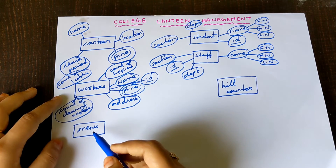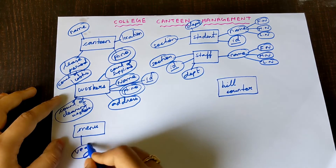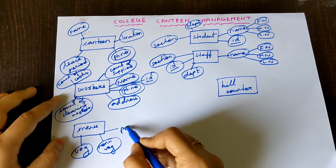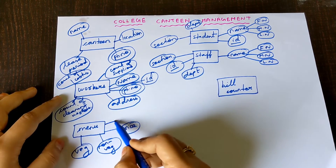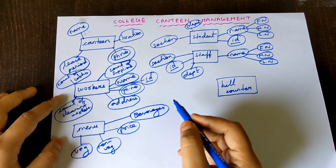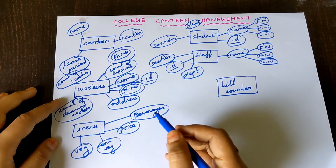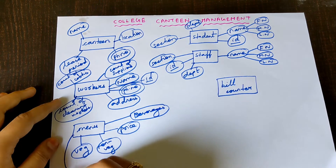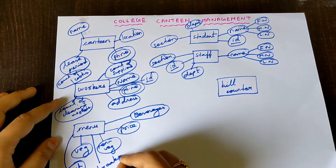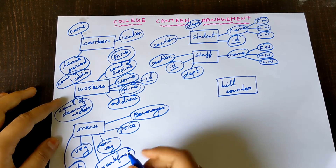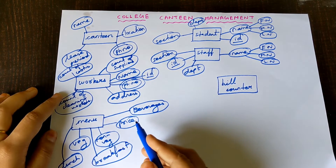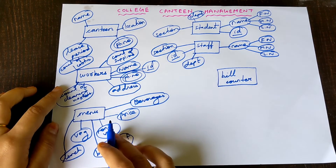For the entity Menu, the attributes are: Veg Menu or Non-veg Menu. Price of each item in the menu. Beverages — what juices, tea, and coffee are available. Snacks available. Lunch available. Breakfast available — items in the menu for breakfast, lunch, and beverages. Veg items, non-veg items, and cost of each item in the menu.